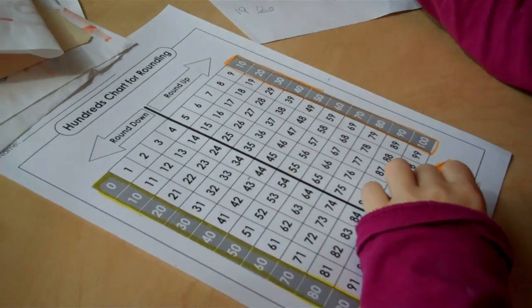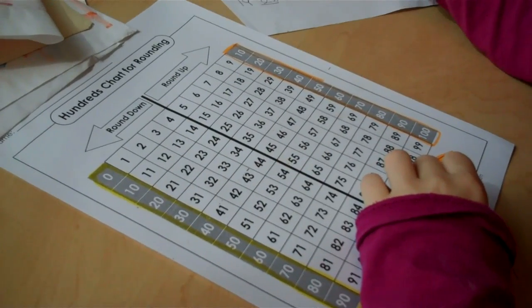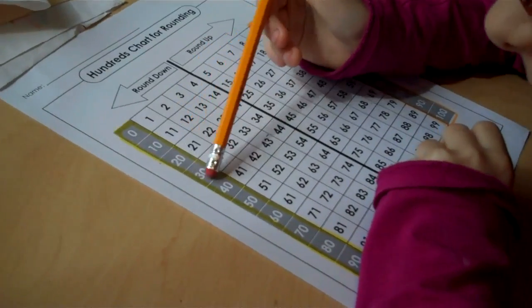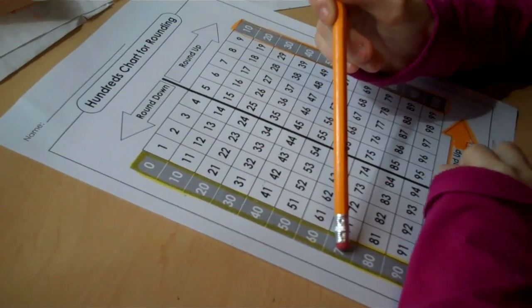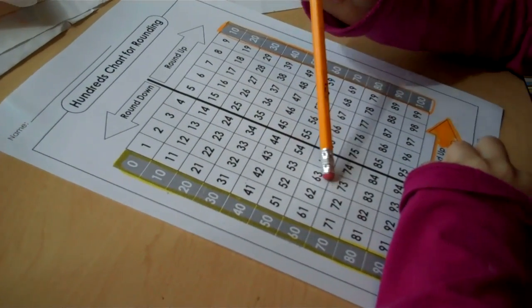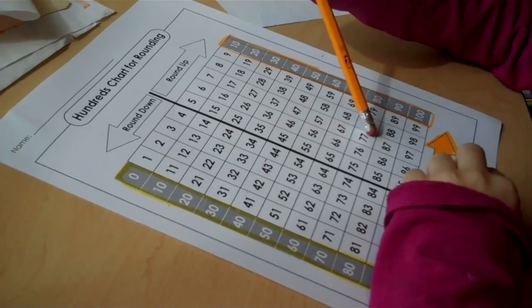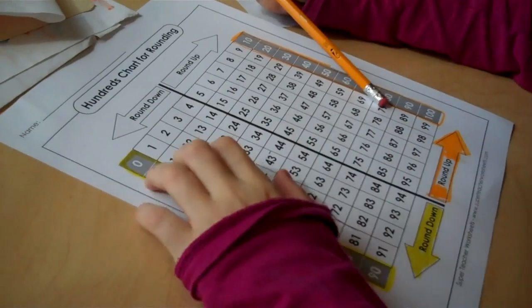Seventy-nine, can you show me on your hundreds chart where it would be on this sheet? Find it. Okay. You're going across to find the number. You found it.